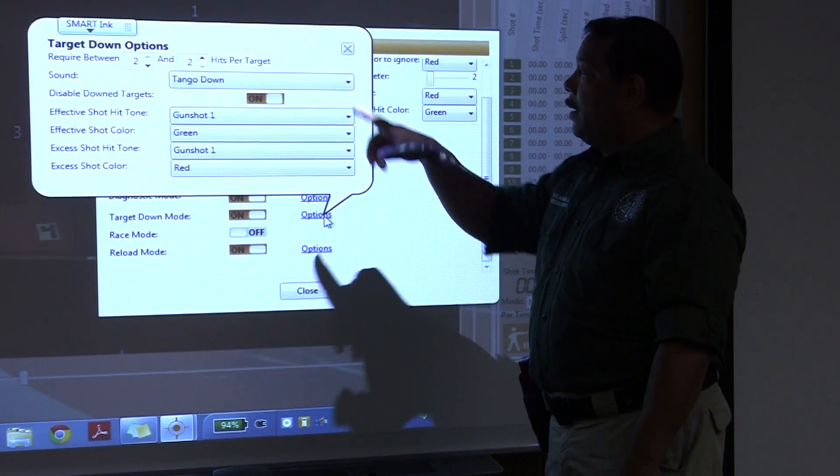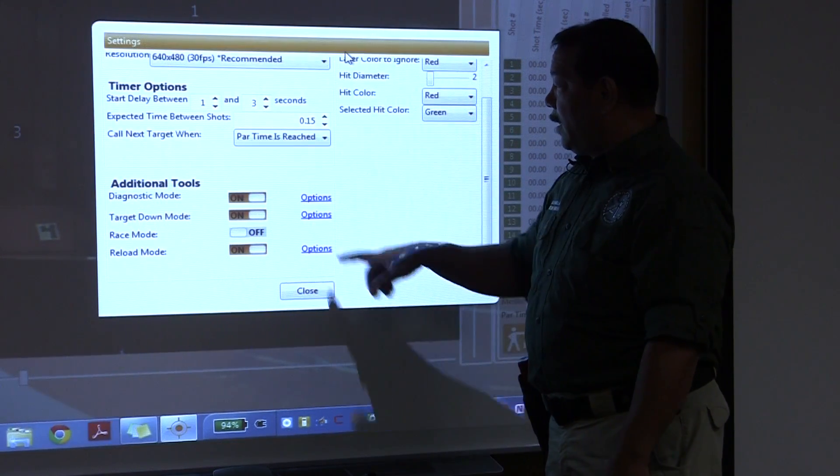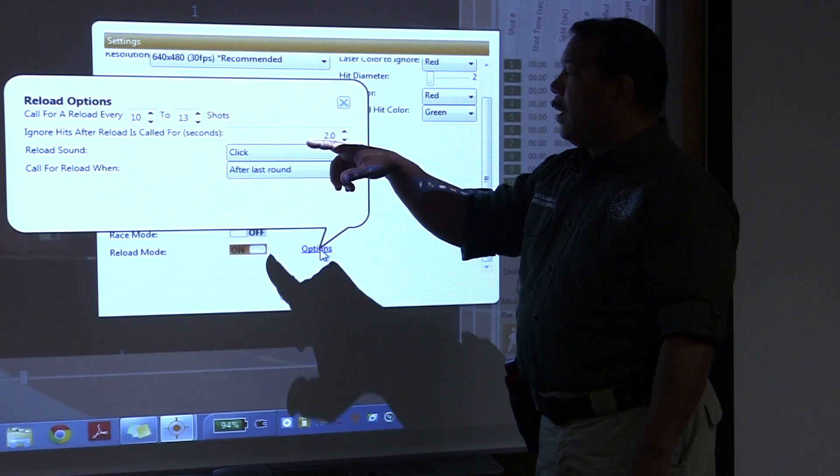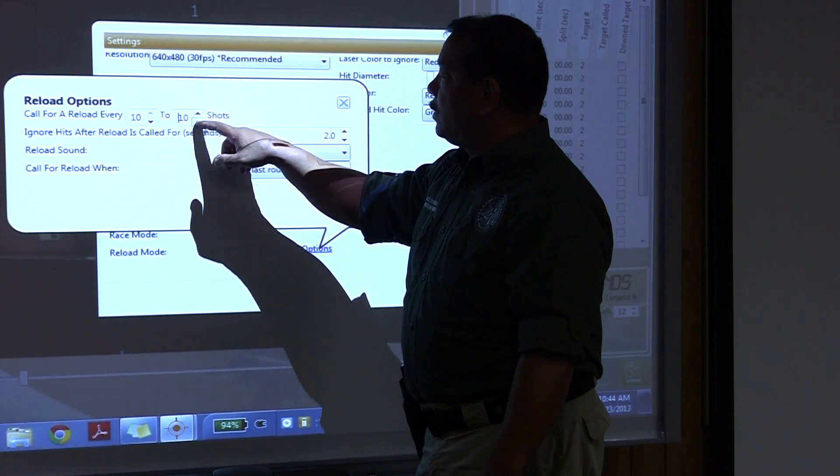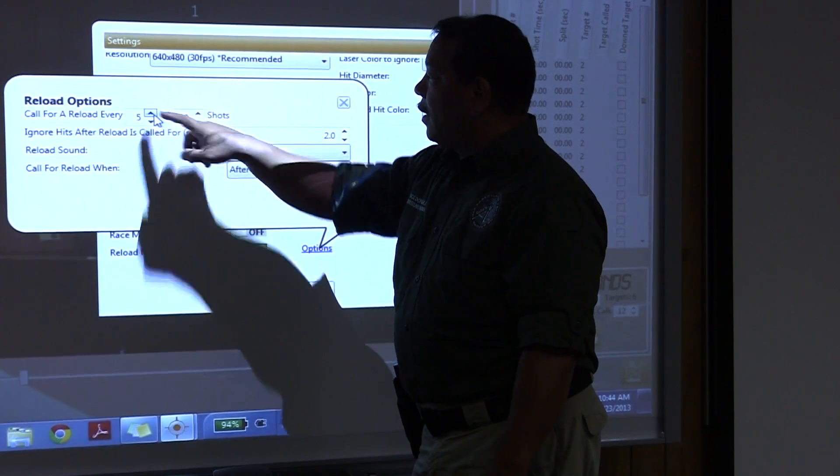Let me see what I have for target down. It's going to say tango down, gives two targets, gunshot, and we're good there. And let's see for reload, we're going to bring that down a little bit because I want to practice some reloads. We're going to bring it down to let's say between five and ten.